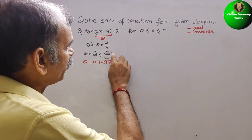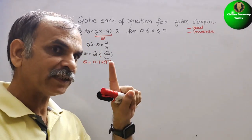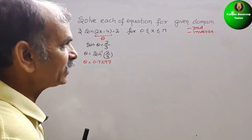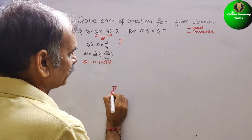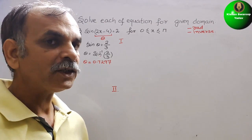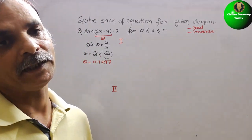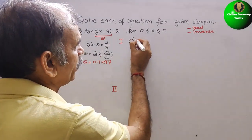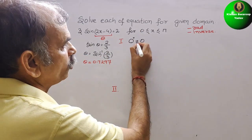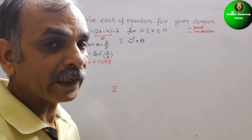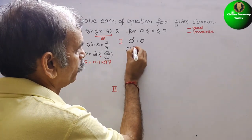The value 2/3 is positive. Positive sine lies in the 1st and 2nd quadrants only. In the 1st quadrant, the solution is 0° + θ, and going around anti-clockwise again gives 360° + θ.